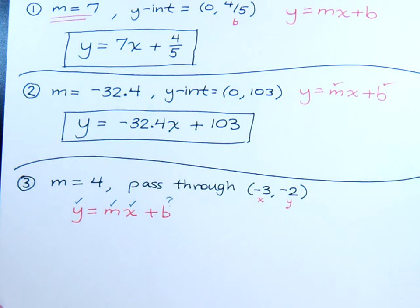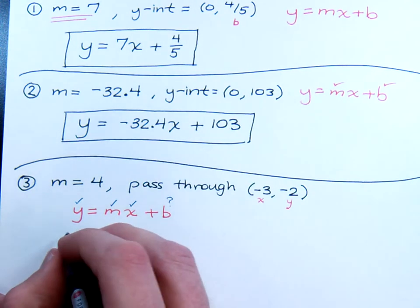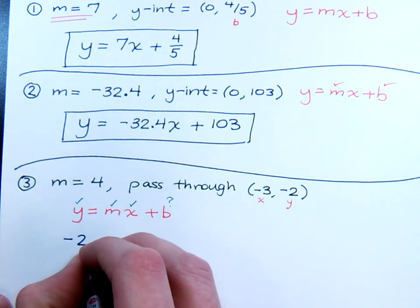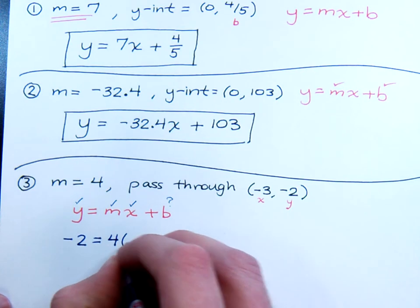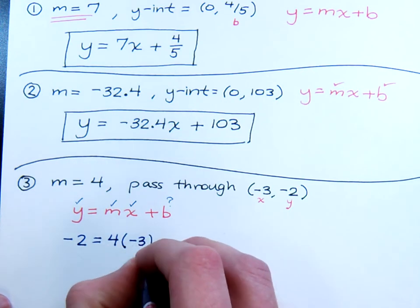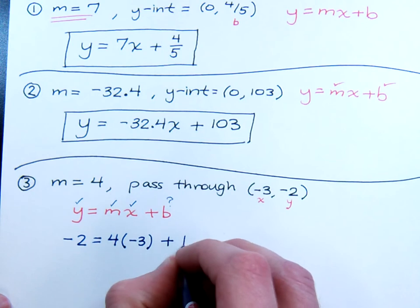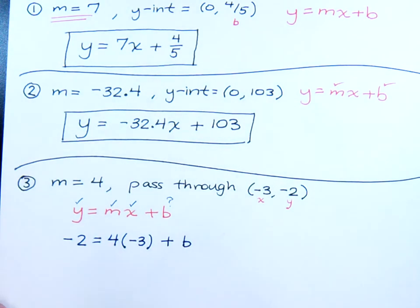Now, when I do that, so my y coordinate is negative 2, my slope is 4, my x is negative 3. And then, of course, b is what I'm trying to figure out. Well, this is just a nice simple equation for us to solve. And when we solve this, we get b.